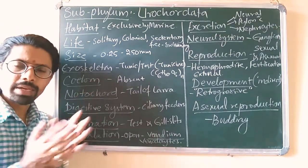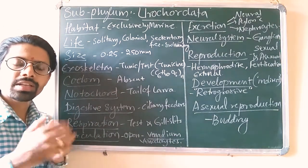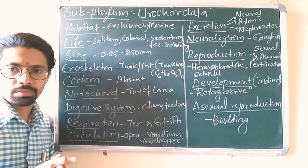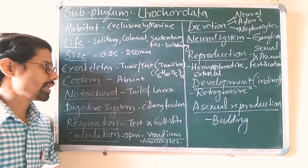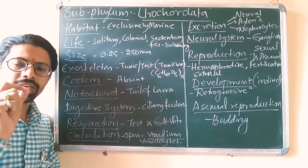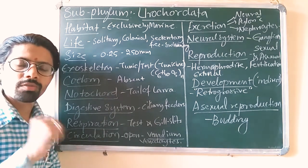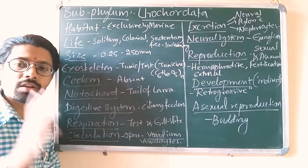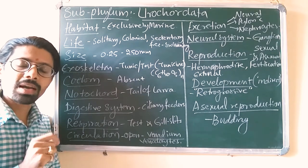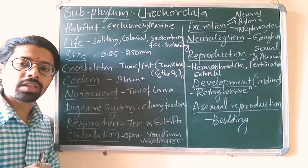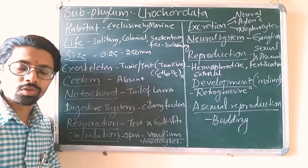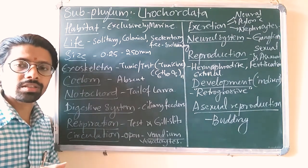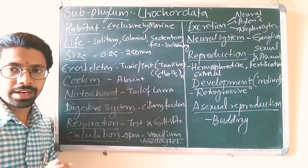Regarding coelom, it is completely absent here, but there is an atrial cavity present inside the body, which is not a true coelom. Regarding notochord, it is present in the tail of the larva only during the larval stage. The tail of the larva possesses the notochord, which reduces in the adult — adults do not have this character.